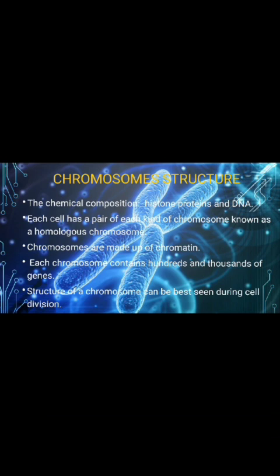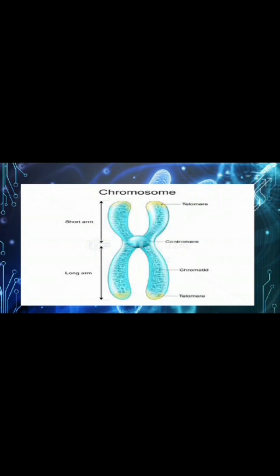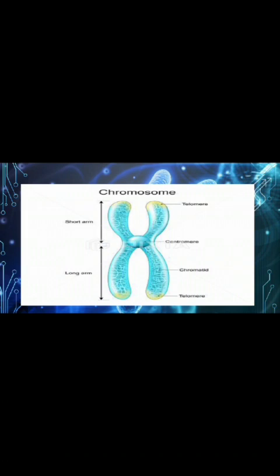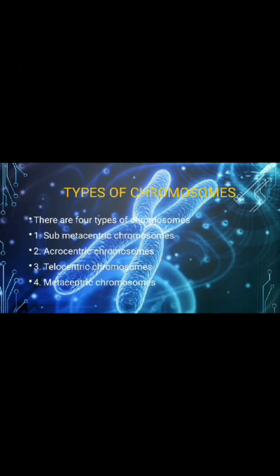The structure of a chromosome can be best seen during cell division. The chromosome contains two arms: the long arm and the short arm. The long arm consists of two parts — chromatid and telomere. The short arm also consists of two parts — telomere and centromere.